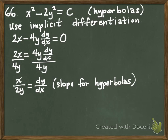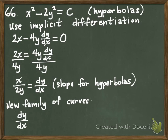So it's going to be negative 2y over x. So we'll say for the new family of curves, we'll have dy dx is equal to negative 2y over x.